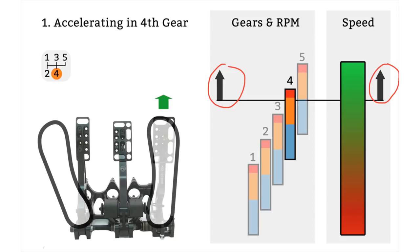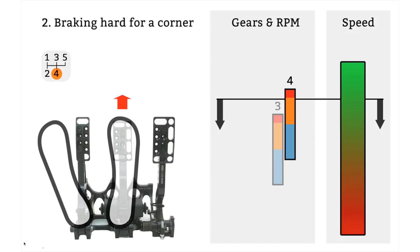So in the second slide here you can see that we've arrived at our braking point for the next corner. We are still in fourth gear however our right foot has moved across from the accelerator pedal to the brake pedal. On the gears RPM and speed chart here you can see that the RPM is beginning to reduce as well as the speed. So we're coming up to the corner, we're on the brakes and everything is slowing down the RPM and the speed as well.